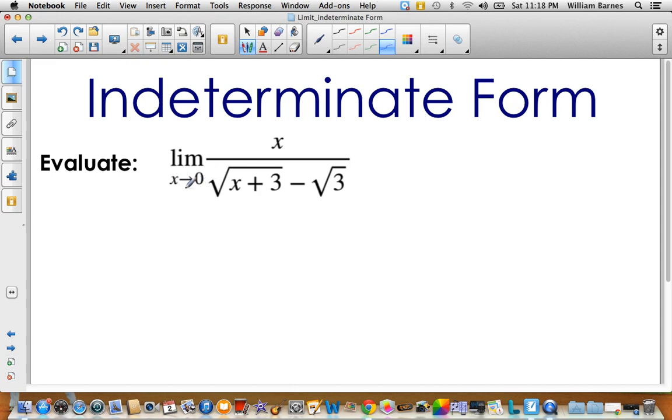So you're in your class doing your homework, and you sub your limit value in here, your limit's approaching, so 0, and you get, well, on top here immediately we get 0, and then I sub in the bottom, I get 0 plus root 3 minus root 3. I end up with 0 over 0.